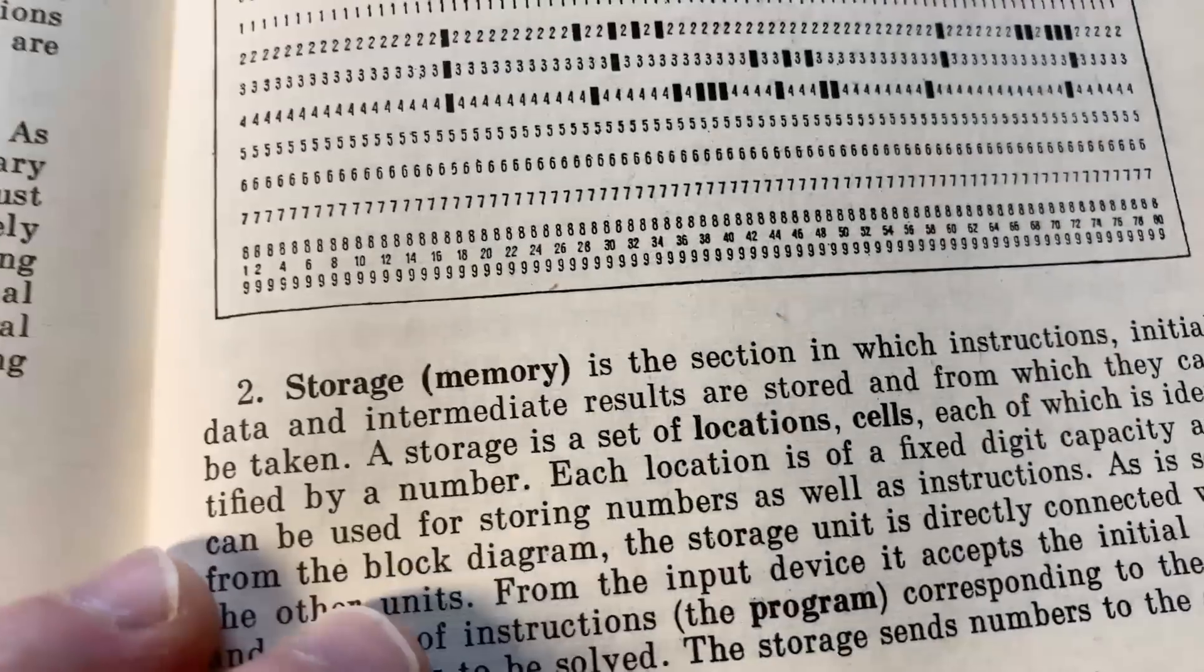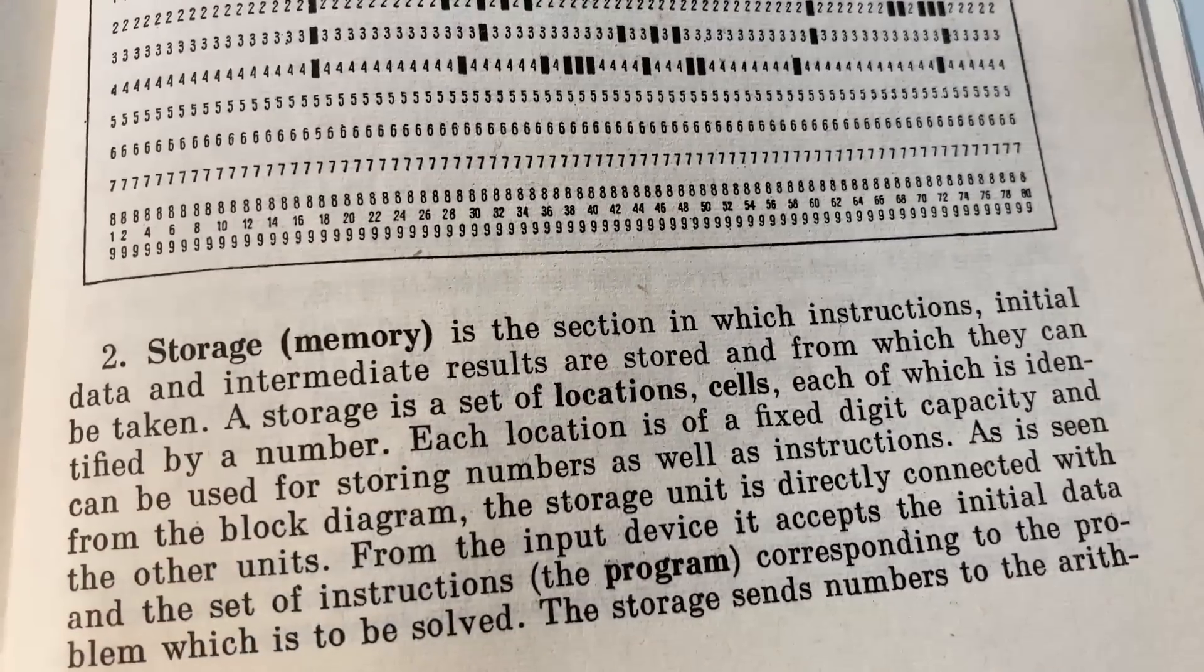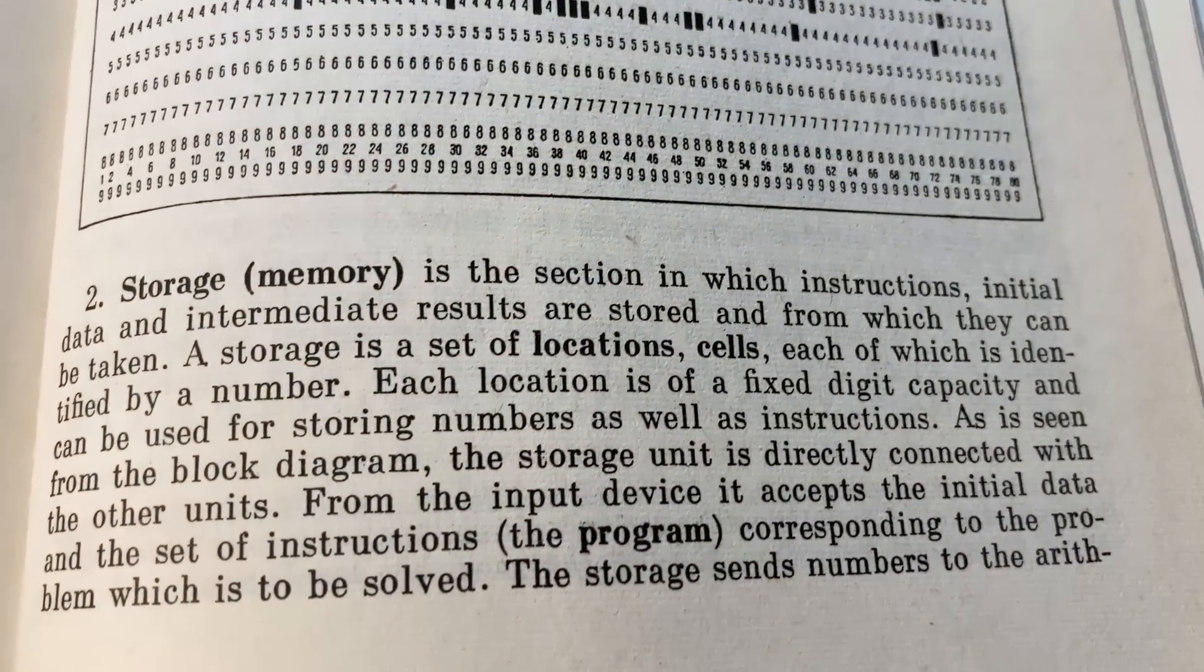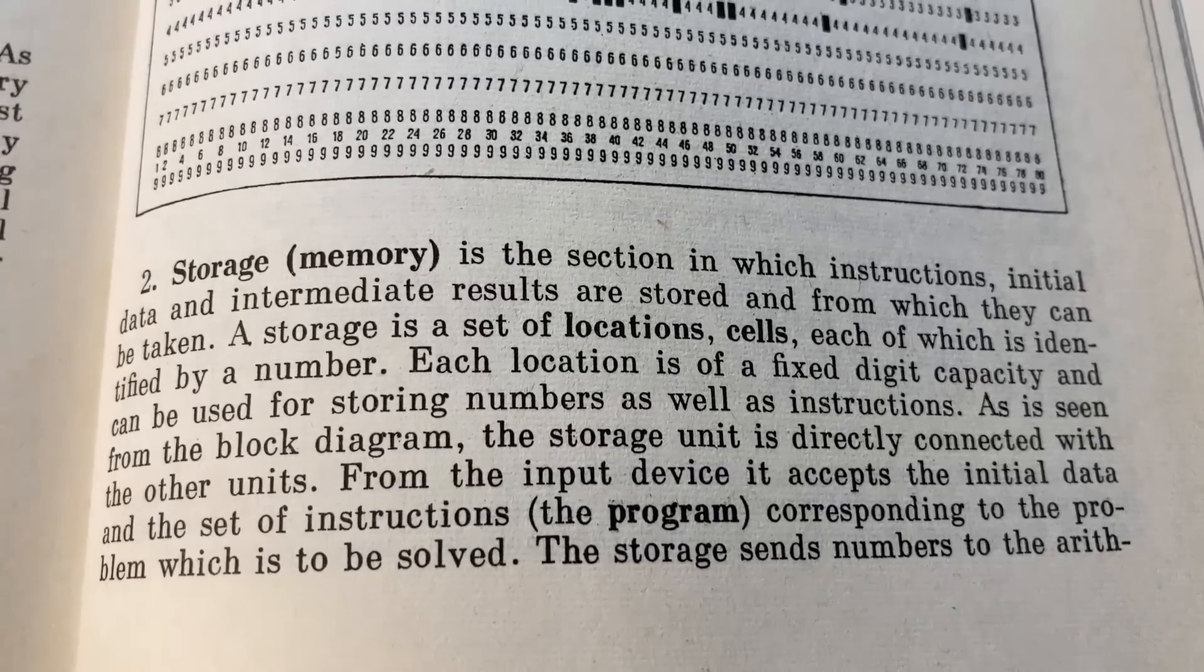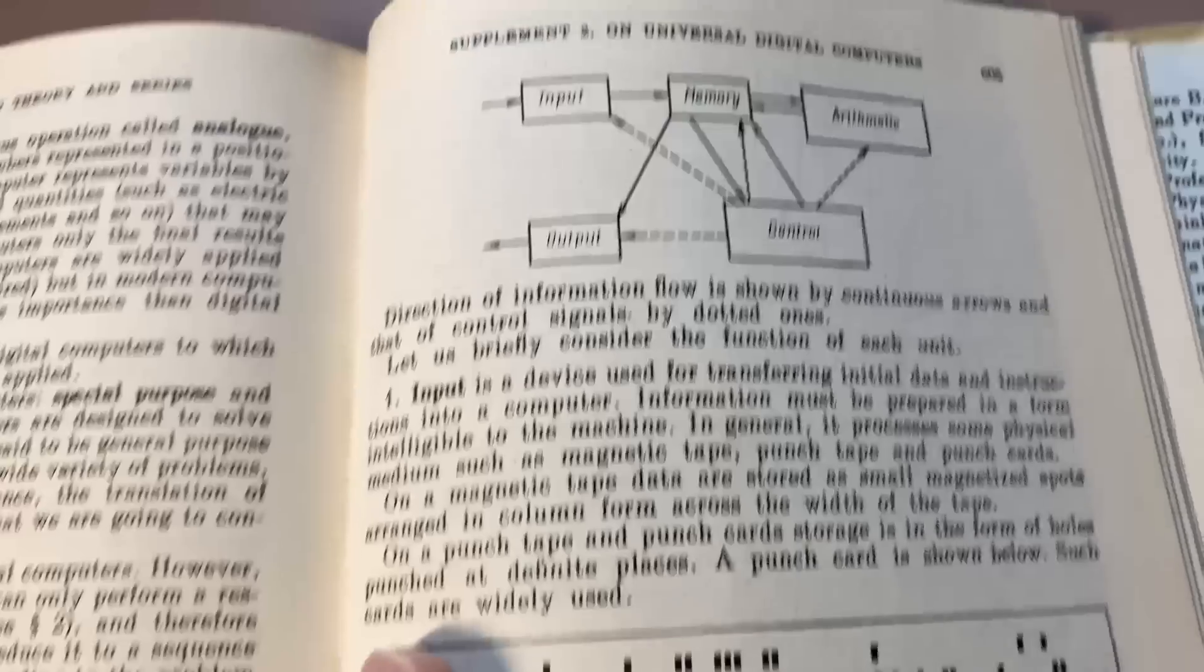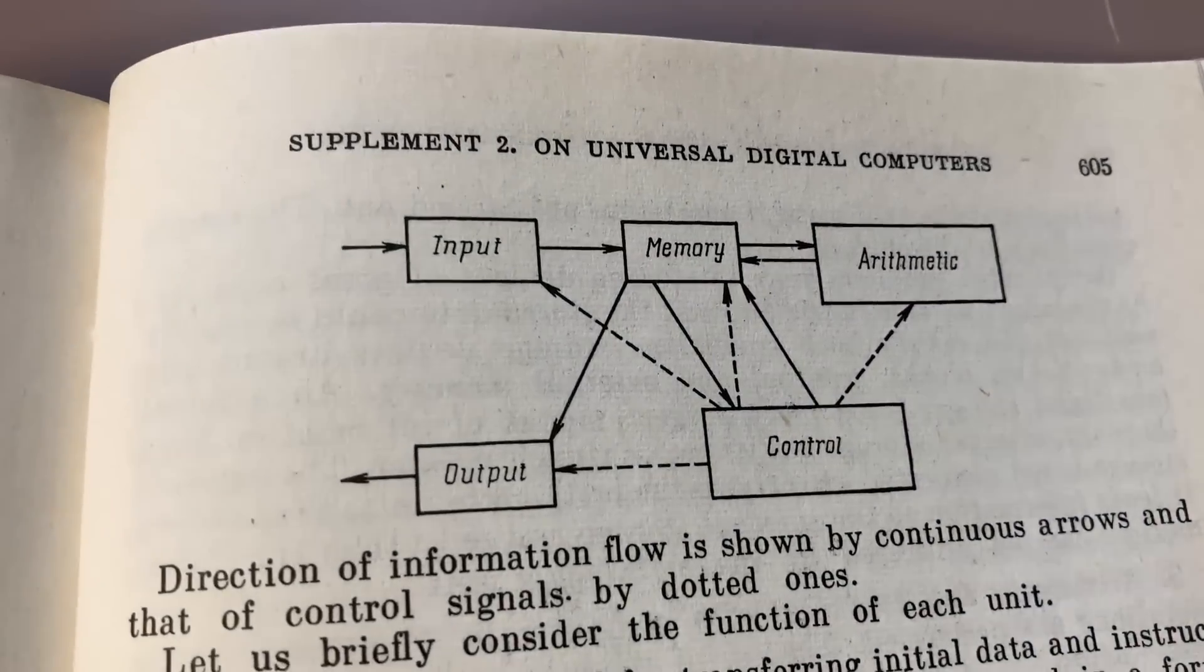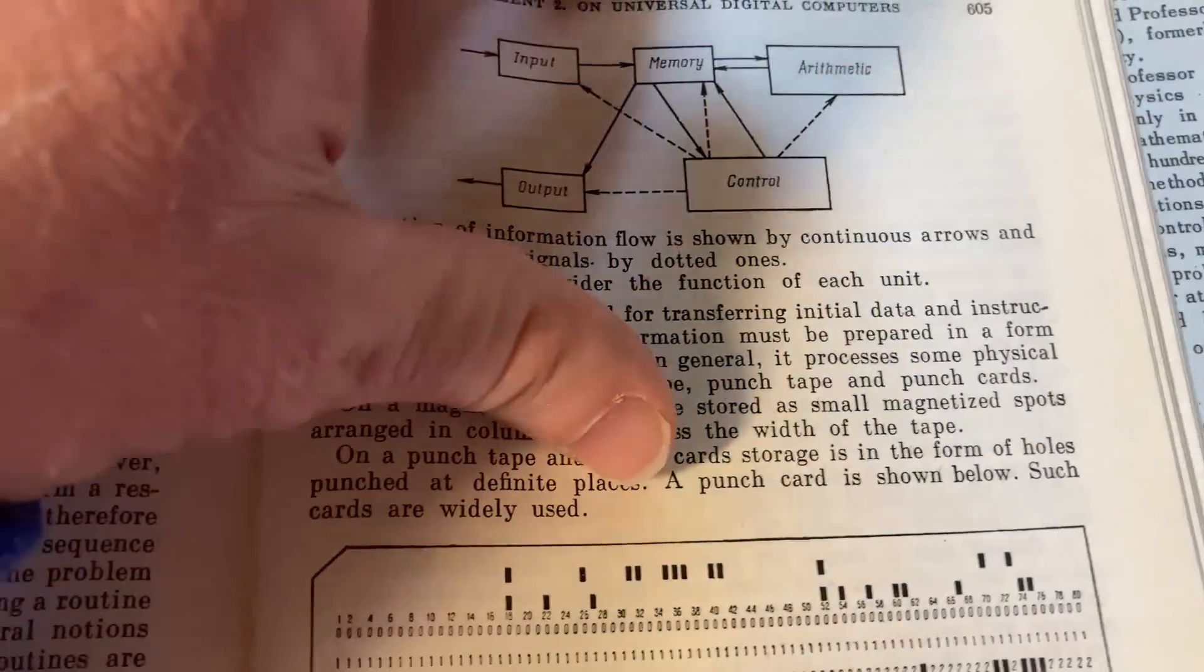Very nice. It talks about storage. Memory is the section in which instructions, initial data, and intermediate results are stored and from which they can be taken. A storage is a set of locations, cells, each of which is identified by a number. However, this is really cool. Input, memory, arithmetic, output, control. Just a look into the past.